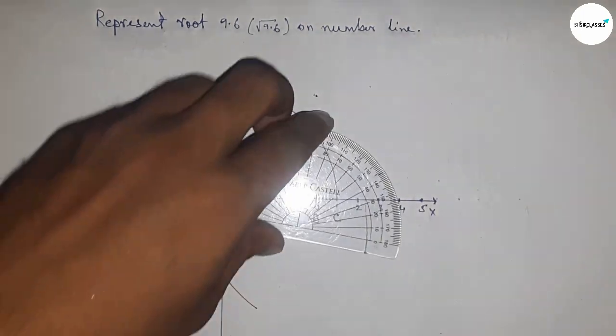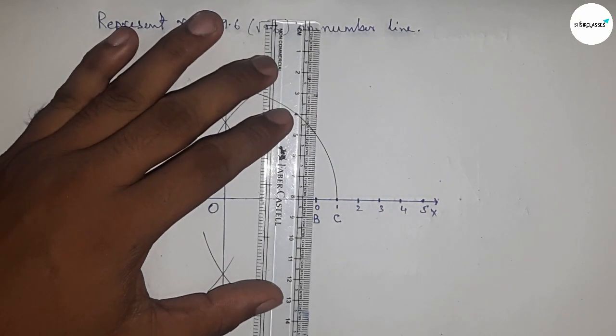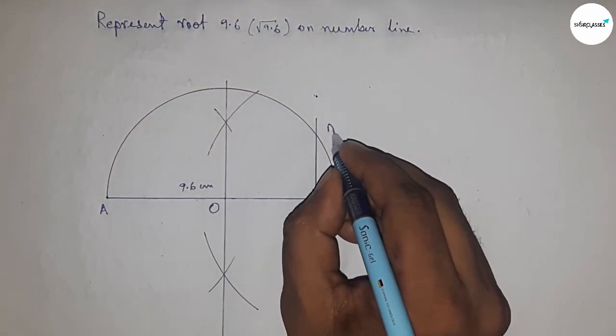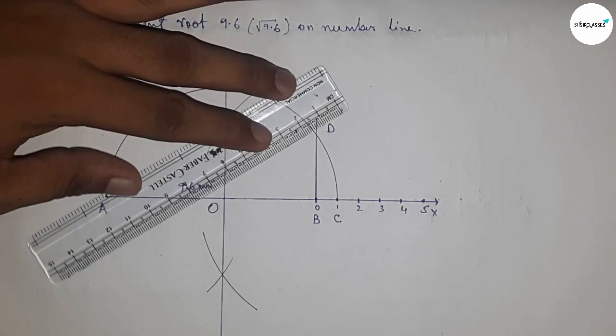Now draw a 90-degree angle at point B using a protractor. Join this line, which meets the semicircle at point D.